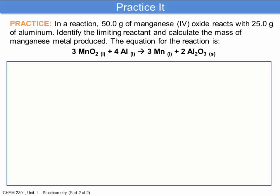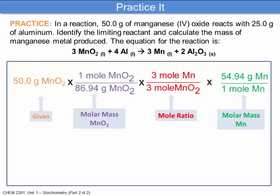In a reaction, 50.0 grams of manganese(IV) oxide reacts with 25.0 grams of aluminum. Identify the limiting reactant and calculate the mass of manganese metal produced. The equation for the reaction is shown here. The equation is already balanced. We go through the conversion from 50.0 grams of manganese(IV) oxide, using the molar mass to convert to moles, the mole ratio to relate within the reaction, and then the molar mass of manganese — calculating 31.6 grams of manganese to three significant digits.